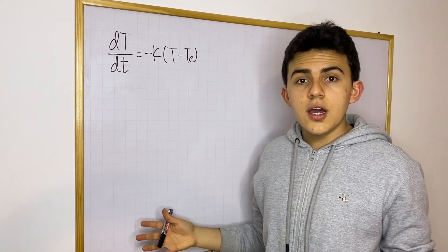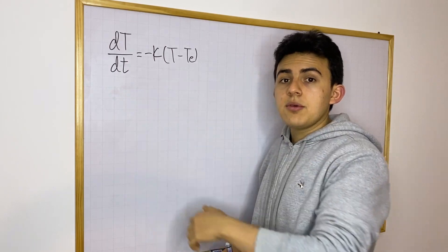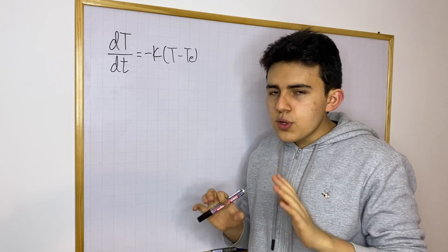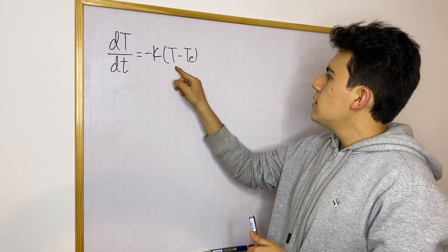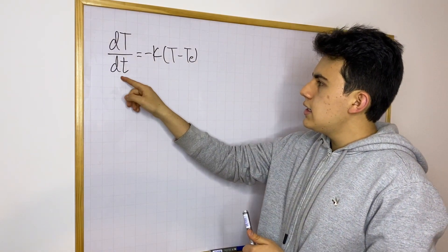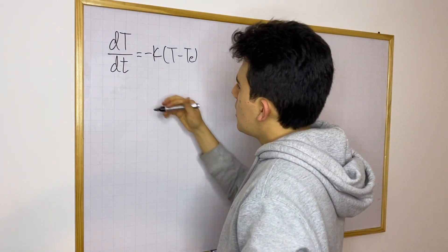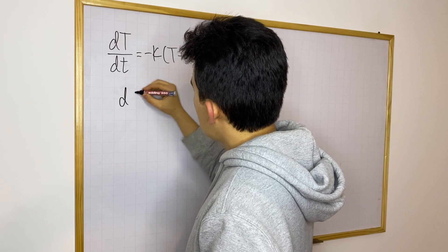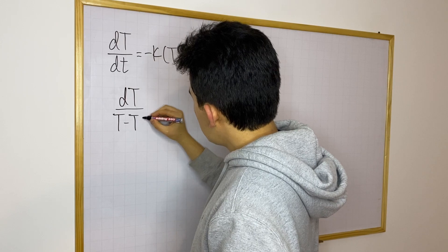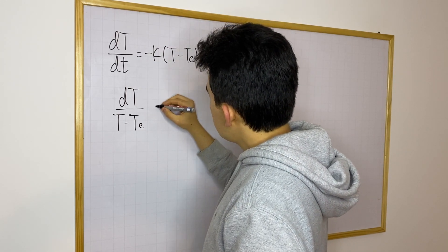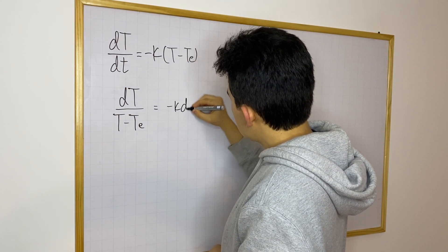So now, this is very nice because you can see that this is a differential equation that can be solved using separation of variables, which makes it really easy to solve. So I'm going to move T minus T sub e to the left-hand side and dt (time) to the right-hand side. So I'm going to get dT divided by (T minus T sub e) equals minus k dt.